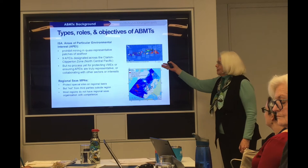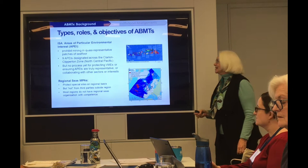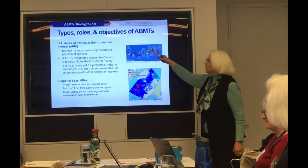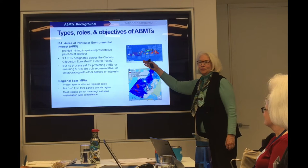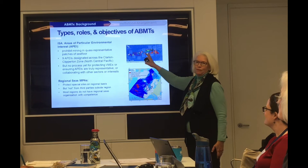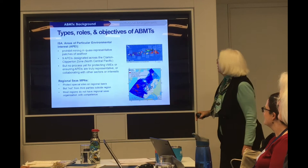In the deep sea mining world, they took a different approach because we know so little about the deep sea. They adopted a series of so-called representative areas of particular environmental interest, actually based on gene flow across the Clarion-Clipperton zone — located between Hawaii, California, and Mexico — covering about the size of the continental US or Europe. About 30% has been put off limits to seabed mining on a provisional basis, while they're still trying to collect data to confirm whether these are the right areas. They're now thinking about whether they need more, and how to protect valuable areas inside the mining exploration zones — regulations are still under development.